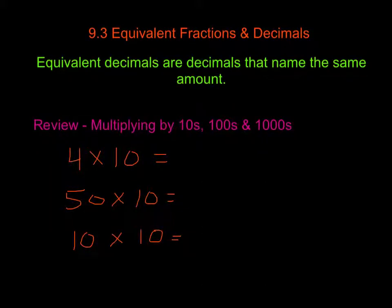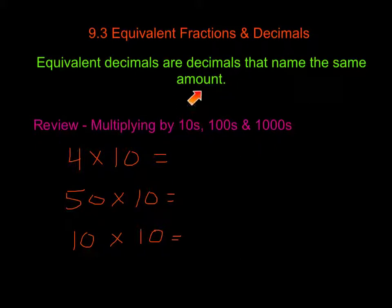Today we are going to be finding equivalent fractions and decimals. Equivalent decimals are decimals that name the same amount. In order to do this, we're going to review our multiplying by tens, hundreds, and thousands.